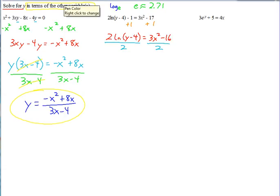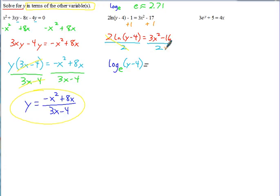The 2s reduce out. Now I'm going to write ln as log base e of y minus 4 equals 3x squared minus 16 all over 2. Now, the way we're going to solve for y is to switch it from log form to exponential form. Remember to switch out of log form into exponential form: first you identify the base, which in this case is e.